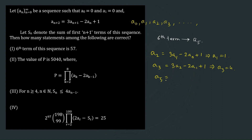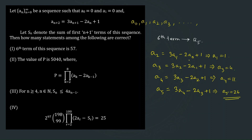Next, a₄ = 3a₃ − 2a₂ + 1 = 3(4) − 2(1) + 1 = 12 − 2 + 1 = 11. Then a₅ = 3a₄ − 2a₃ + 1 = 3(11) − 2(4) + 1 = 33 − 8 + 1 = 26. So the sixth term of the sequence is 26, not 57. Statement 1 is wrong.